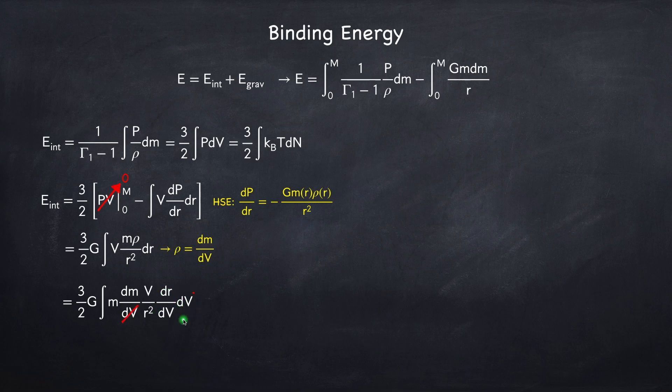The top dv will cancel with one of the bottom dv's, and dvdr for a sphere is just the surface area of the sphere, it's four pi r squared. The volume is four-thirds pi r cubed. So plugging this in and simplifying, I get the final form for the internal energy.